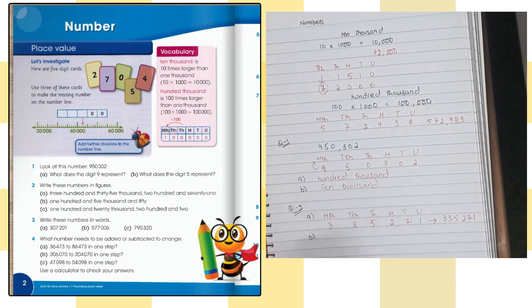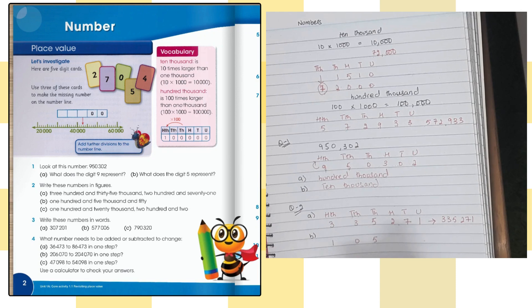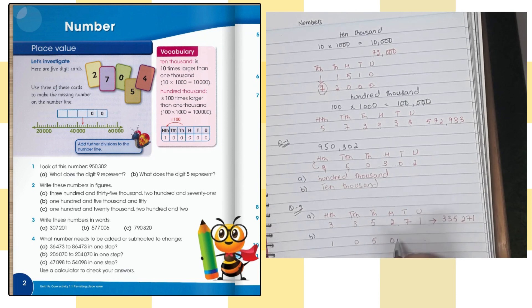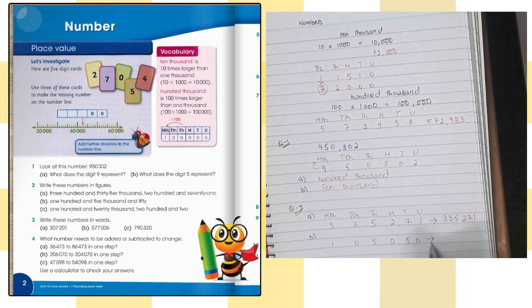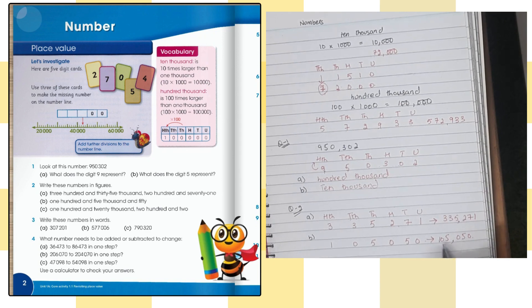Part B: one hundred and five thousand and fifty. So one hundred goes in hundred thousands — that is 1 in hundred thousands. There is no ten-thousands figure mentioned, so that is zero. Five thousand goes in thousands. Then fifty — there is no hundreds mentioned, so hundreds is zero. Fifty means five in tens and zero in units. So the number is 105,050. You can confirm: one is hundred thousands (five figures after it), five is thousands (three figures after it), and fifty is tens-units.